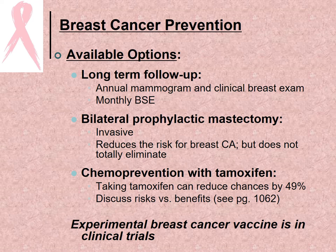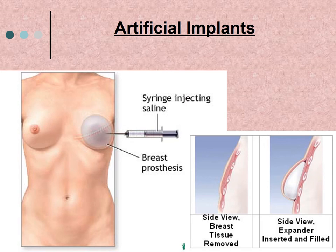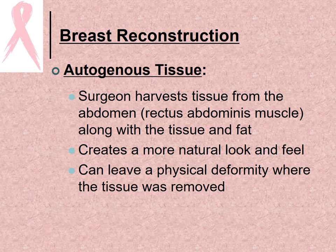There is also an experimental breast cancer vaccine currently in clinical trial. Breast reconstruction after mastectomy can give the appearance of a regular breast using artificial implants. The implant is placed between the tissue and the chest wall and expanded through saline injections over several months until it matches the size of the other breast.